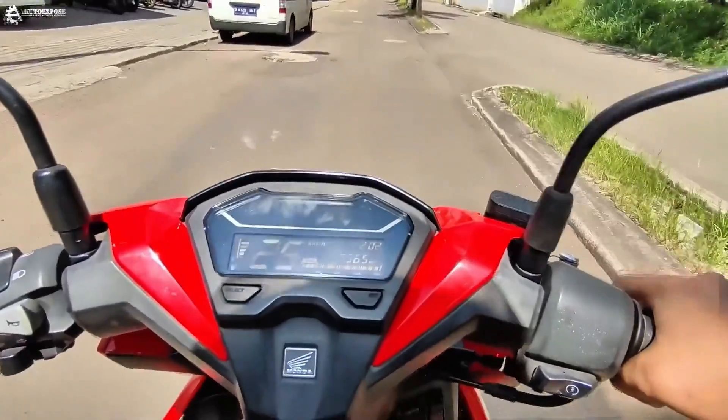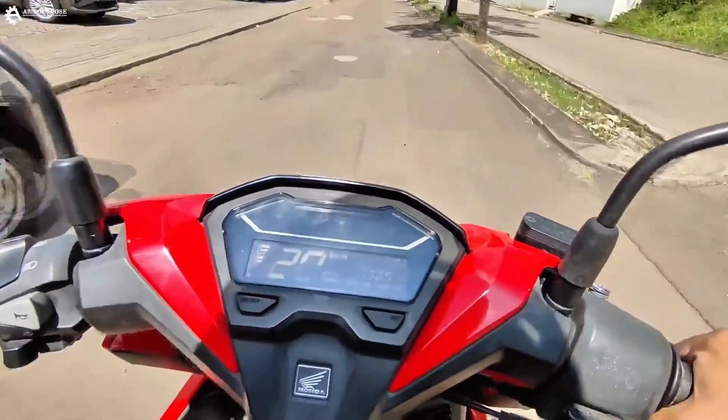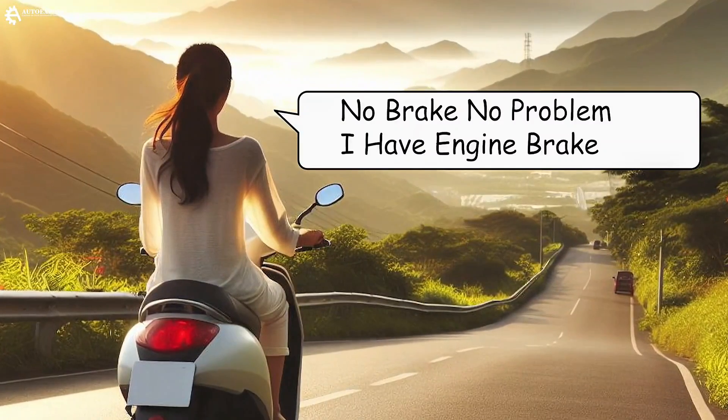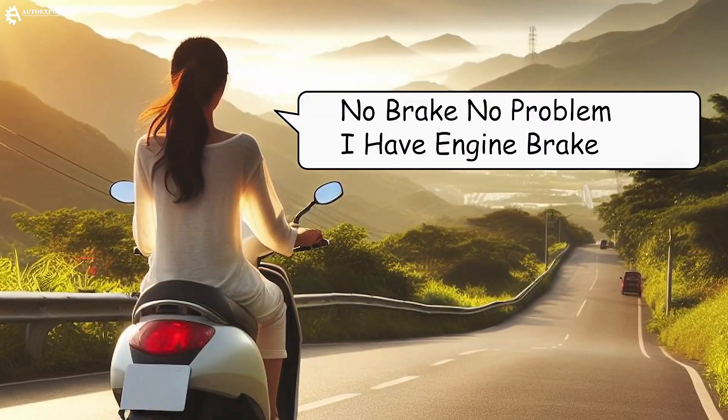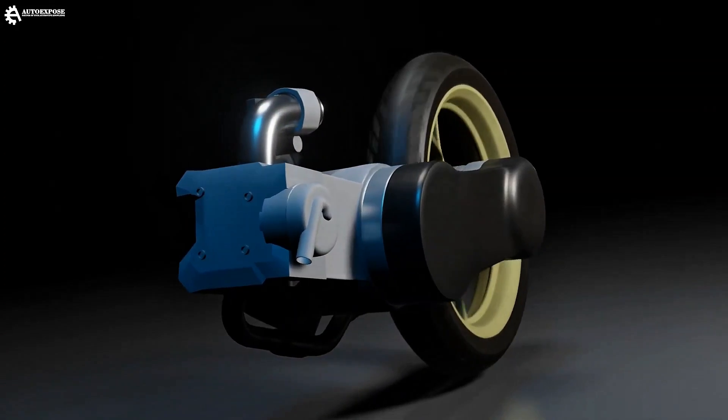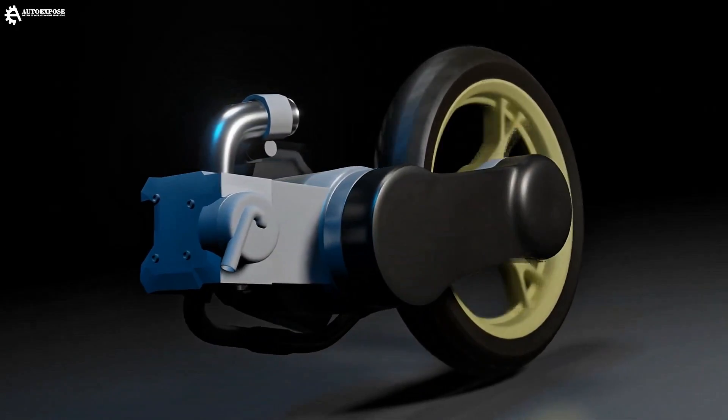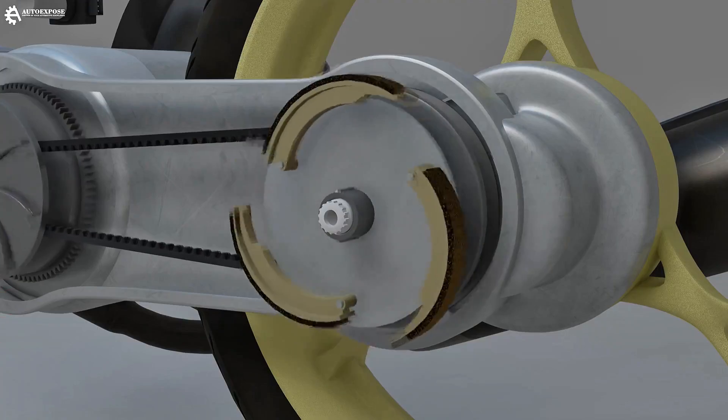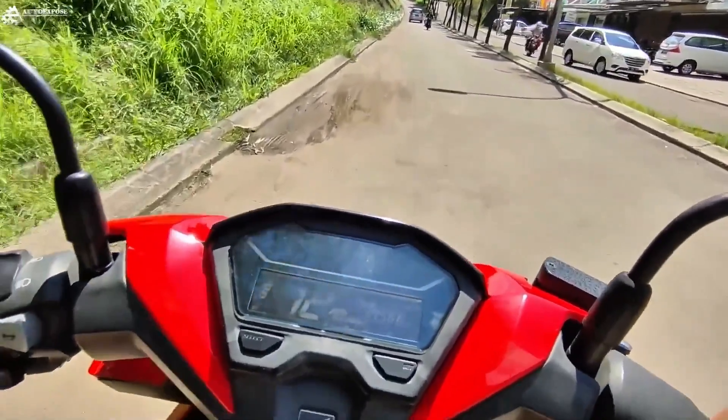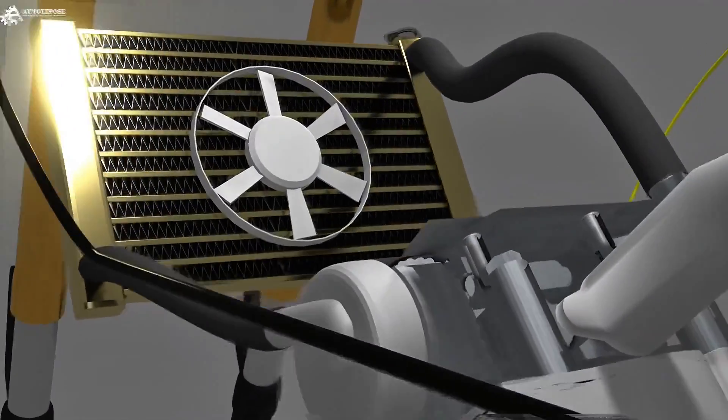The problem is, many people still don't know how to activate the engine brake on a scooter. Curious, right? How can a scooter without a clutch activate the engine brake? Well, in this video, I'll provide an animated explanation of how the engine brake mechanism works on a scooter and how to apply it. Make sure you watch this video until the end, so you can fully understand what I'm about to explain.